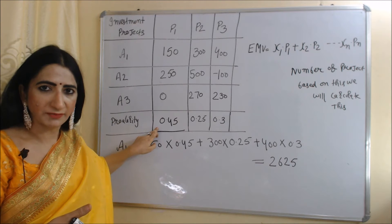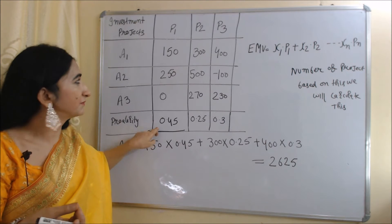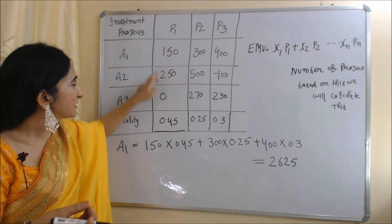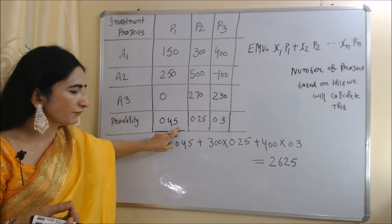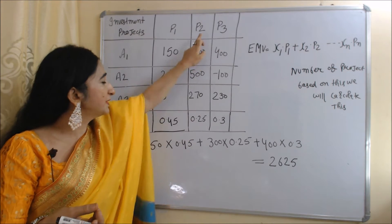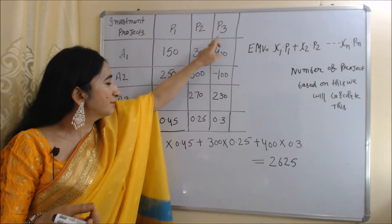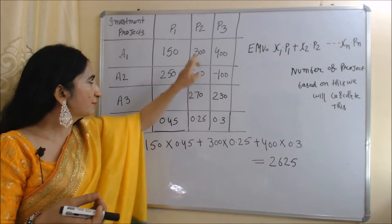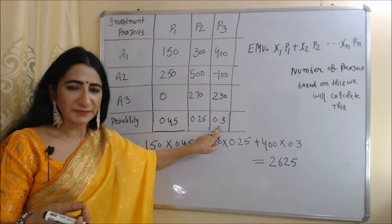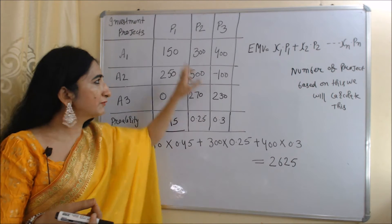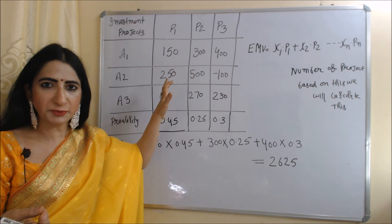Here we have the probability of each outcome. Probability means the possibility of each outcome occurring. The probability of outcome P1 is 0.45, the probability of outcome P2 is 0.25, and the probability of outcome P3 is 0.3. First, we will calculate the Expected Monetary Value of each project, and whichever project has the highest EMV, we will select it — meaning we will invest in it.